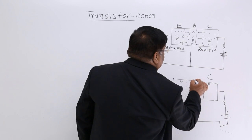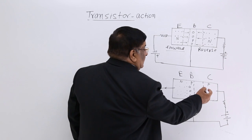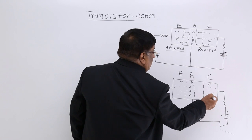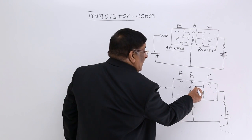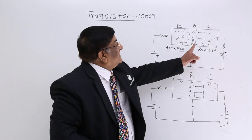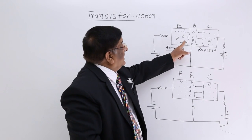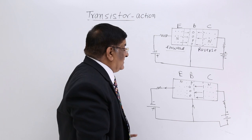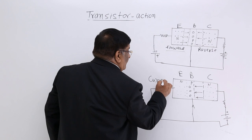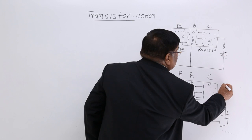This is the collector, this is the base, and this is the emitter. So we have N, P, N. This depletion layer has widened up, so the resistance in this layer has increased, and the resistance in the forward-biased layer has decreased. Therefore, the current in this circuit increases.